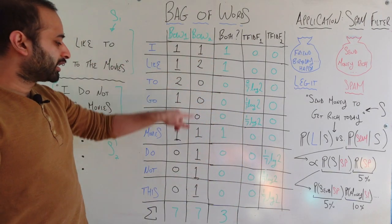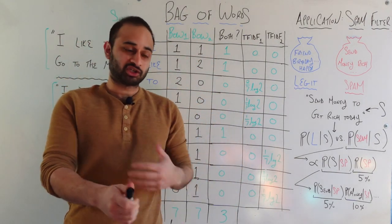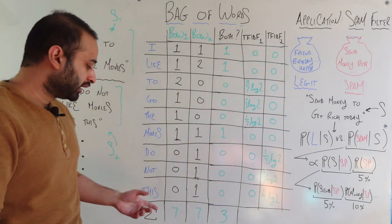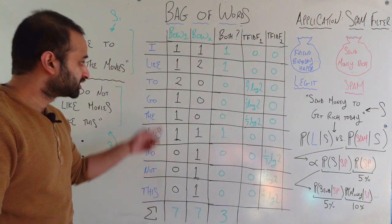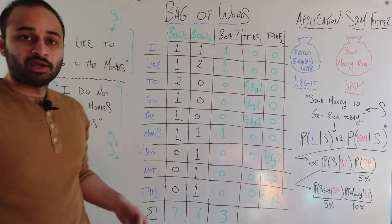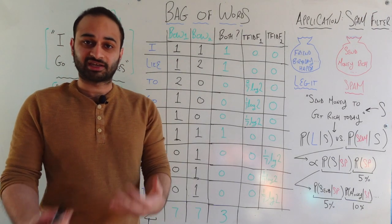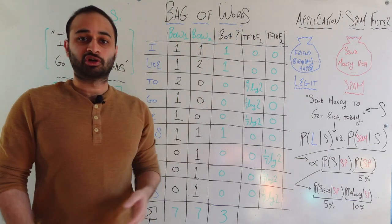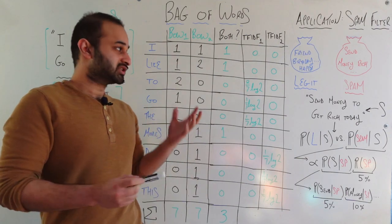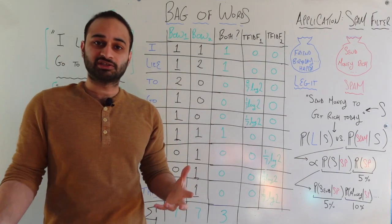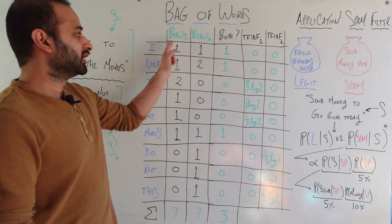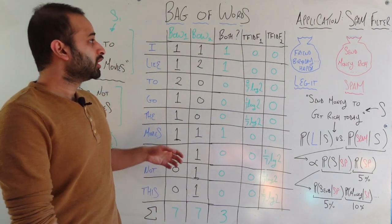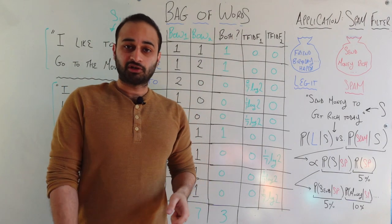And we can just take these two bag of words vectors and we can start extracting some additional features. So we can start building even more features. For example, we can count the total number of words by simply adding up this column. And we can count the total number of words in the second sentence by adding up the second column. We can also create some kind of feature called both, which asks, is this word occurring in both sentences? And that would simply be one if neither of these is zero, and it would be zero if either of those is zero.